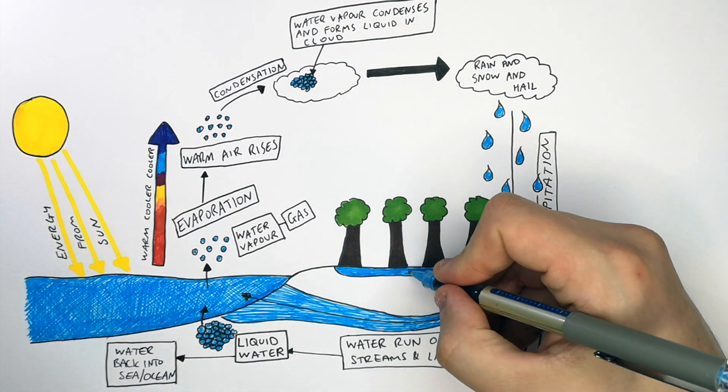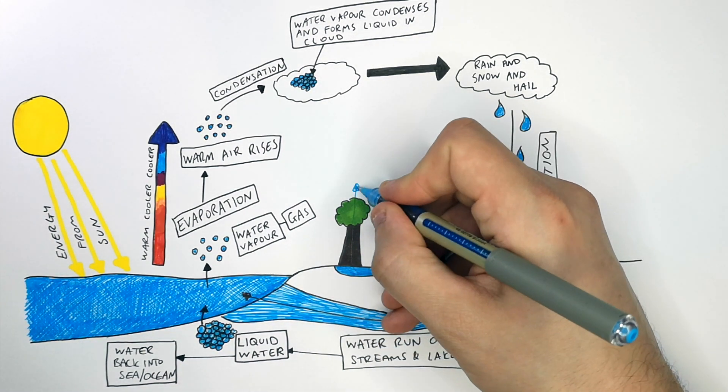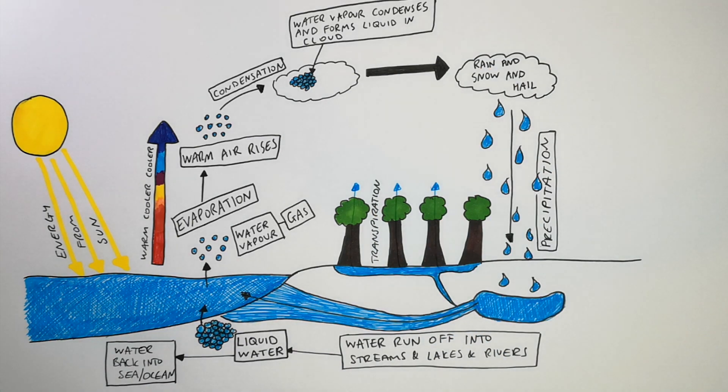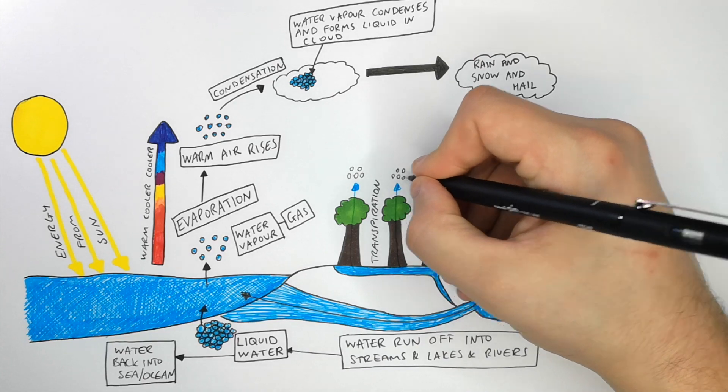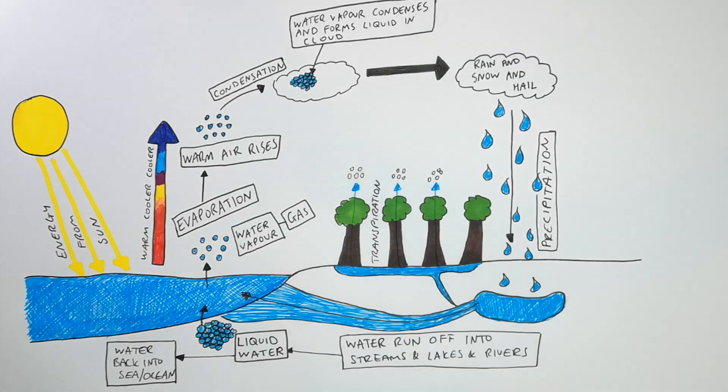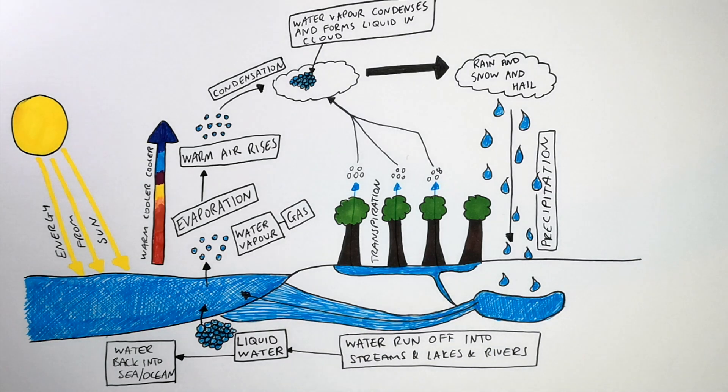Water is absorbed by the roots of plants. This water will go through the plant or tree by the process of transpiration. Water is absorbed as a liquid. It goes through the plant and it evaporates out of the leaf as a gas back into the atmosphere. This water vapor will eventually rise, form clouds and then fall as precipitation.